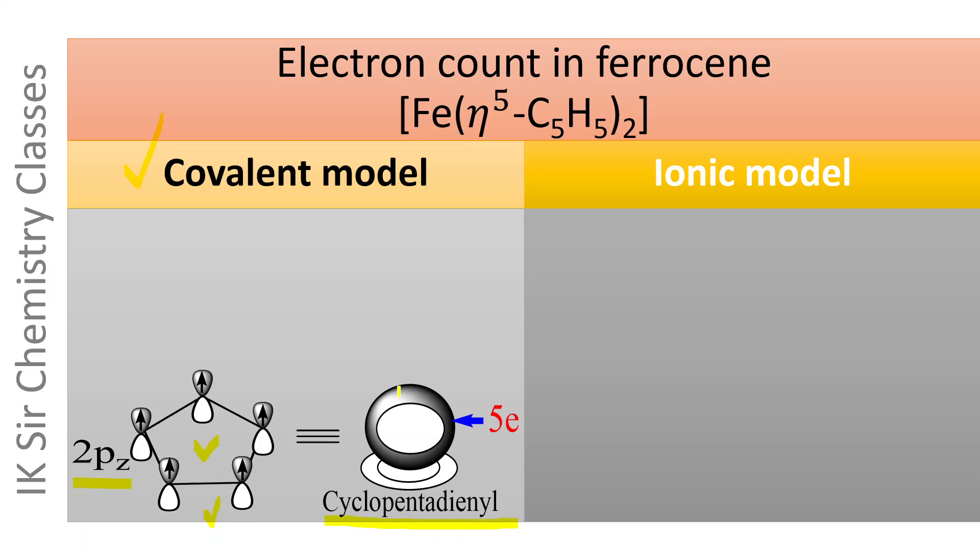This delocalized pi electron cloud contains five electrons. In ferrocene molecule, iron atom, neutral iron atom is sandwiched between two cyclopentadienyl rings. Iron atom contains eight valence electrons, 3d6 4s2.